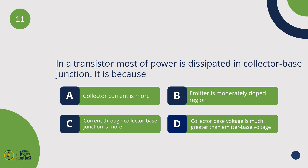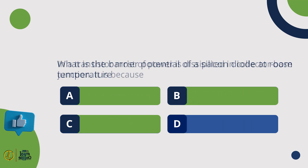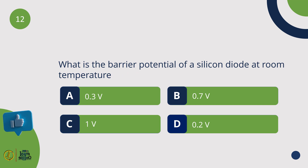In a transistor, most of the power is dissipated in the Collector Base Junction because the Collector Base Voltage is much greater than the Emitter Base Voltage. The barrier potential of a silicon diode at room temperature is 0.7 Volt.